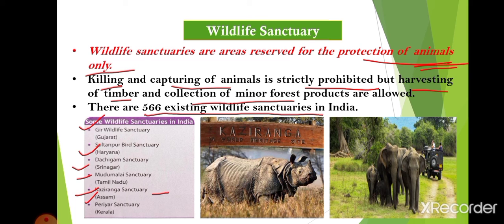Wildlife sanctuaries are different from zoos. In zoos, animals are kept for public exhibition, live in an artificial environment, and are given food at specific times. In wildlife sanctuaries, animals live in their natural habitat and obtain food on their own by hunting or grazing. That is why wildlife sanctuaries are distinct from zoos.